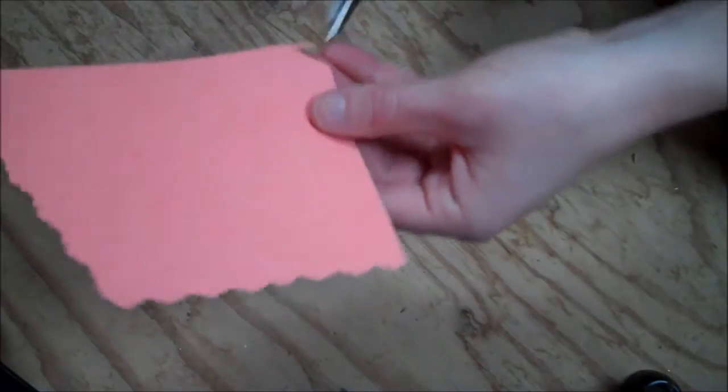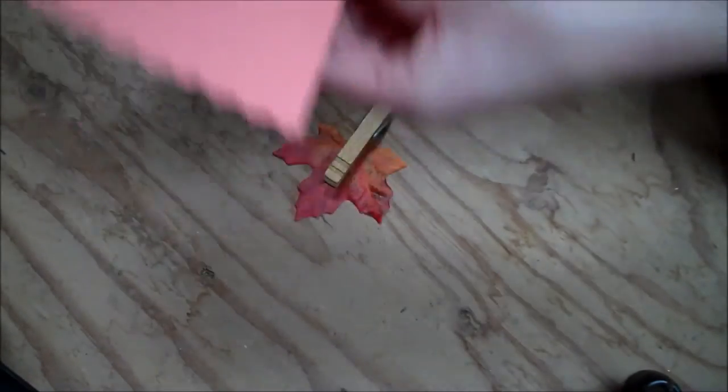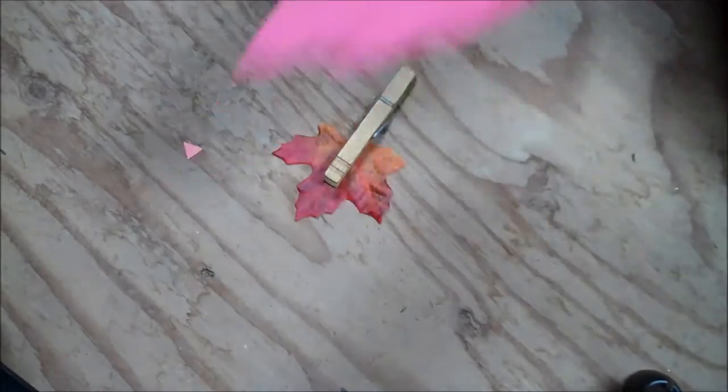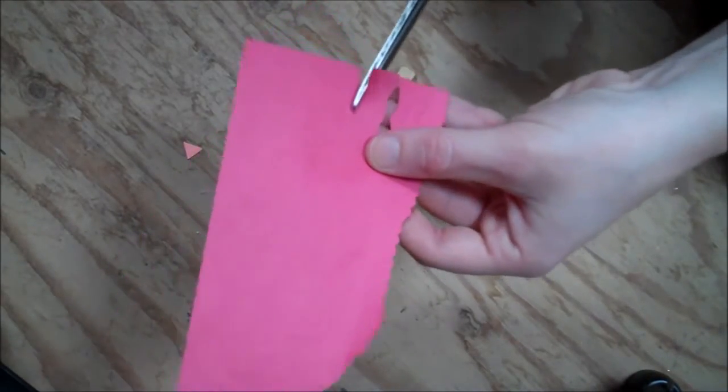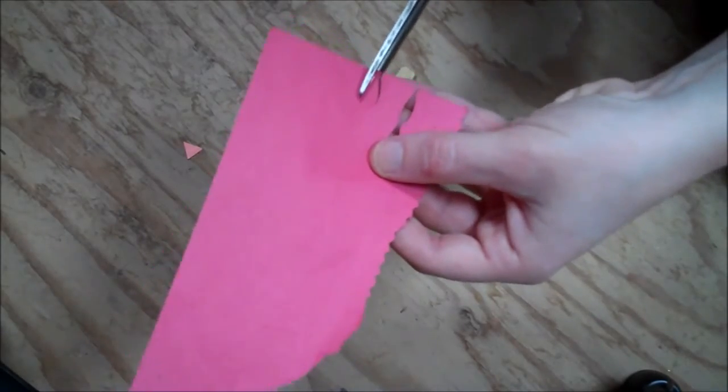Then cut an orange triangle - you use that as the beak. And then you cut kind of a red oval. That'll be the turkey's gobbler.